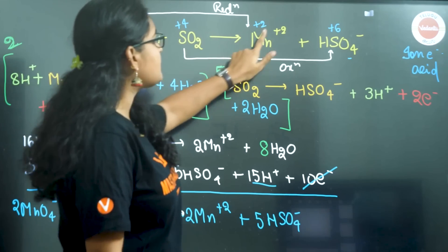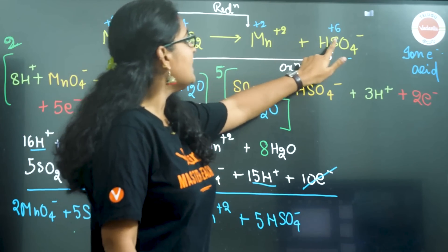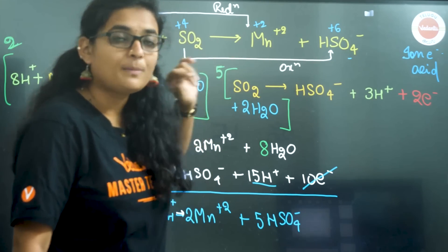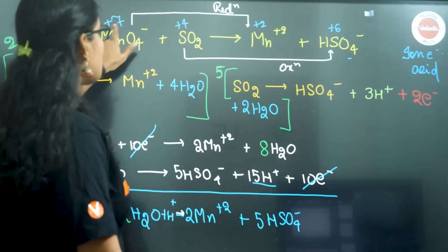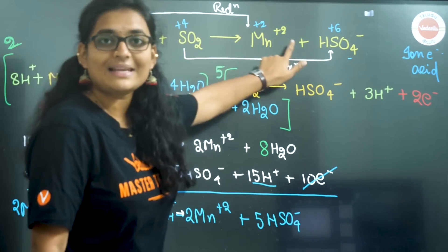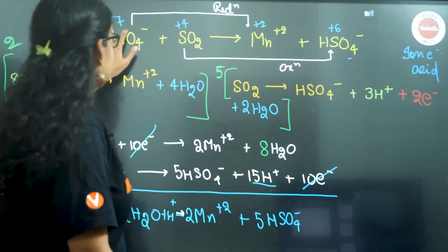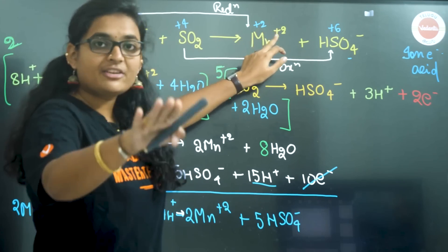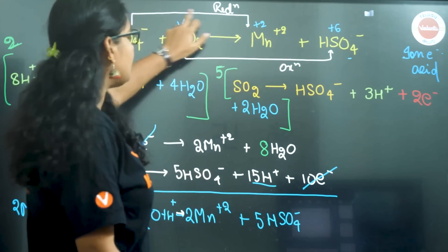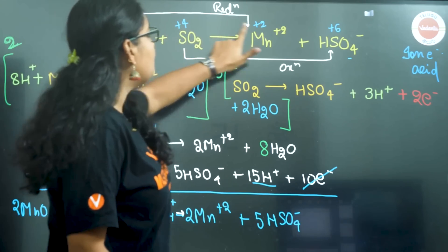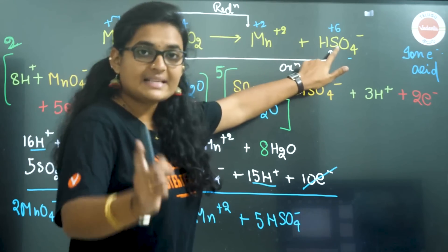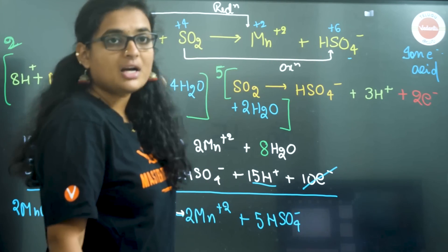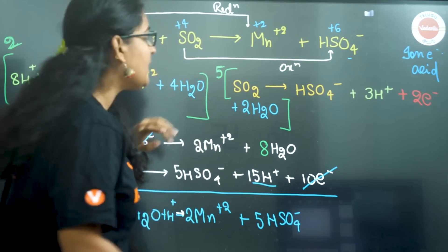Example: MnO4− plus SO2 gives Mn2+ plus HSO4−. First, calculate the oxidation number. Manganese goes from +7 to +2, a decrease in oxidation number — that is reduction. Sulfur goes from +4 to +6, an increase — that is oxidation.